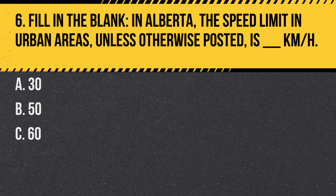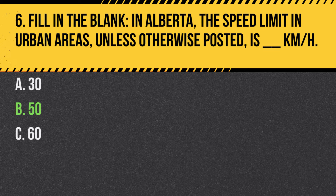Question 6. Fill in the blank. In Alberta, the speed limit in urban areas, unless otherwise posted, is: a. 30. b. 50. c. 60. Answer: b. 50. The default speed limit in urban areas in Alberta is 50 km/h, unless signs indicate otherwise.